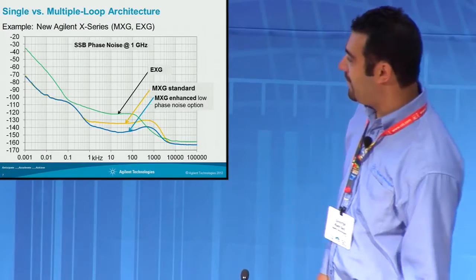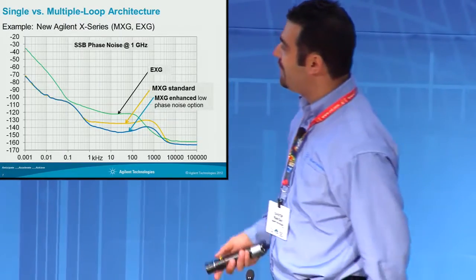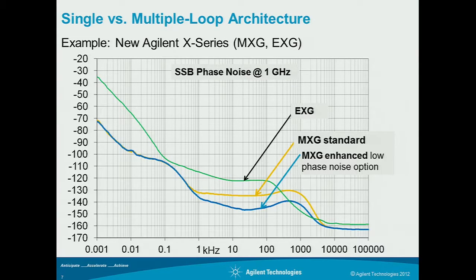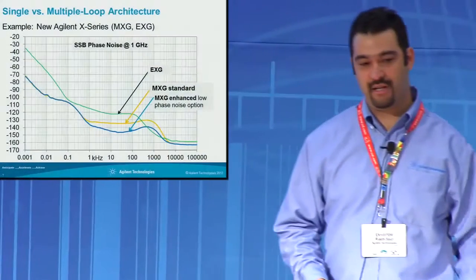Here's an example of our new X-Series signal generators. We have our EXG, which has a single loop architecture. With our new MXG, we have what's called a triple phase lock loop architecture. Fundamentally, what happens here is our pedestal region drops by 10 to 25 dB going with that new triple loop synthesizer architecture.